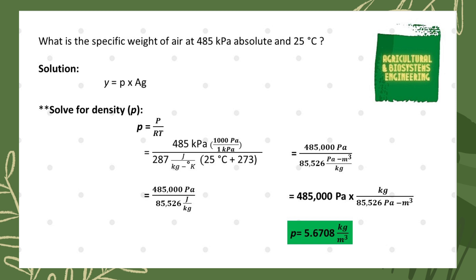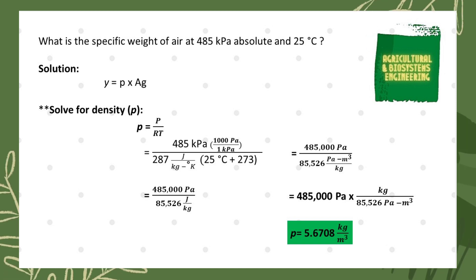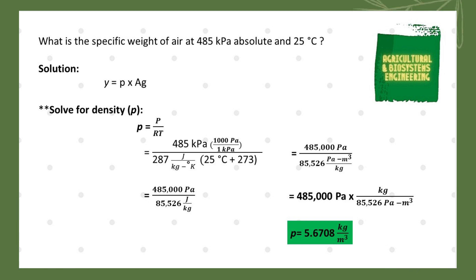Since we already have the values for our formula, we can directly substitute. However, we first need to convert our given temperature of 25 degrees Celsius into Kelvin by simply adding 273. At the same time, we convert 485 kilopascal into pascal using the conversion factor: 1000 pascal equals 1 kilopascal.